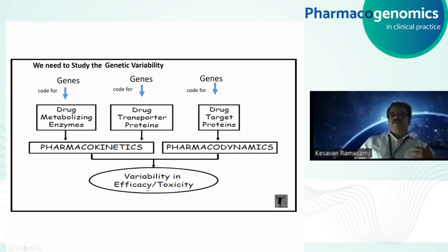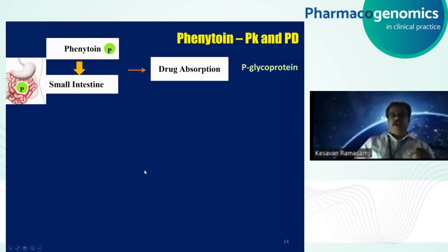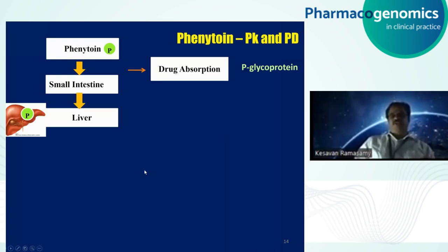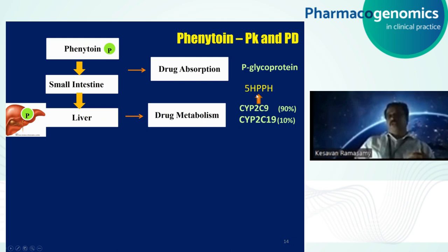The drug chosen for this session is phenytoin. Let's look at its pharmacokinetic and pharmacodynamic profile. Once the drug enters the small intestine, it is absorbed, and transport proteins play an important role. When it comes to the liver for metabolism, one of the chief enzymes that metabolizes phenytoin is the cytochrome P450 2C9 enzyme, which contributes to 90% of metabolism. To a small extent, CYP2C19 also plays a role. Once 2C9 metabolizes phenytoin, it leaves an inactive water-soluble metabolite — 5-hydroxyphenyl phenytoin — which is excreted from the body.